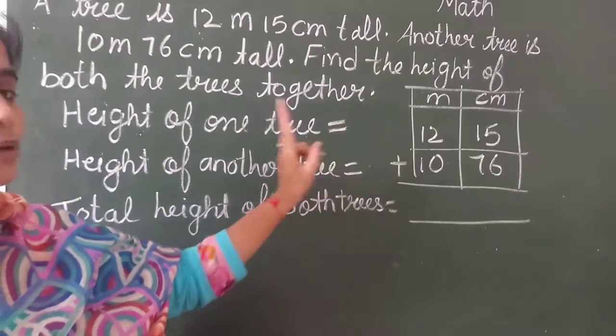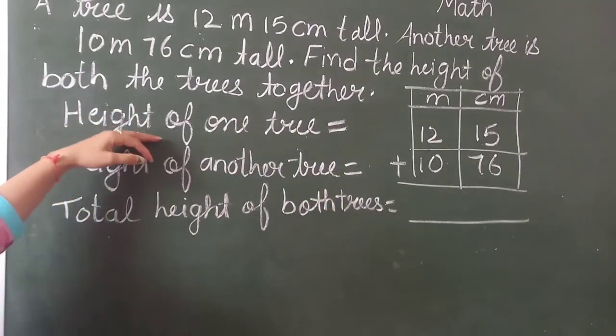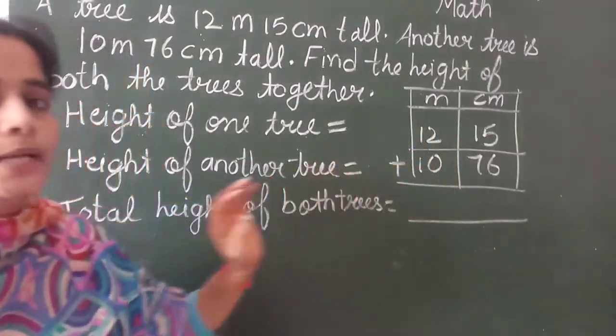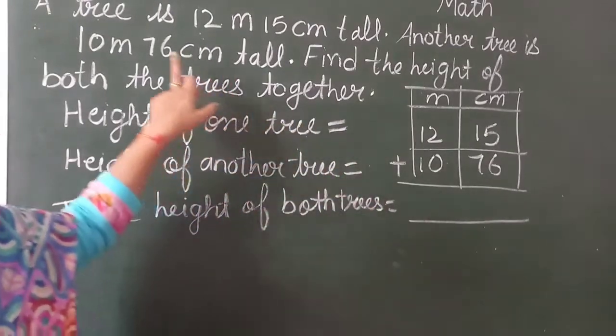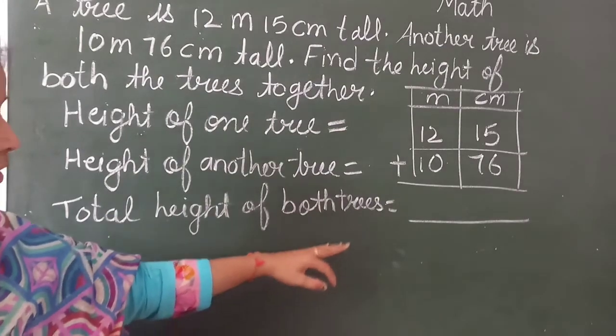So what we have to do? Statement firstly we will write height of one tree this is 12 meter and 15 centimeter and height of another tree that is 10 meter and 76 centimeter. We have to find out the height of both trees together.